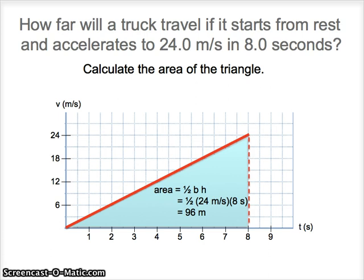So no matter what the shape is, the shape will tell us, the area of that shape will tell us how far the object has traveled. And if it's above the axis, it means the object is moving forward. If it's below the axis, the object moves in reverse.